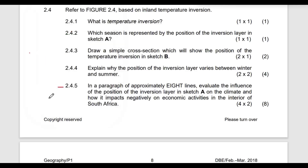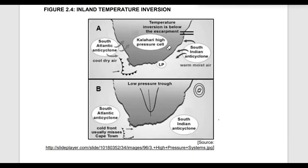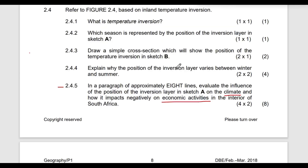Question 2.4.5 asks us, in approximately eight lines, to evaluate the influence of the position of the inversion layer in sketch A on the climate. Since sketch A is winter, you need to state the influences brought by the inversion layer during winter regarding the climate and how it negatively impacts economic activities in the interior of South Africa. In winter the inversion layer is below the escarpment, blocking evaporation due to more subsiding dry air.